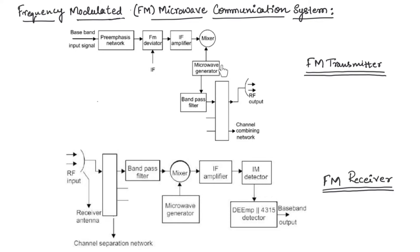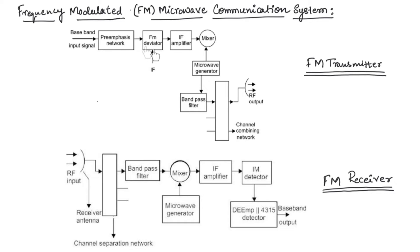This figure shows the FM Transmitter, which consists of various blocks as you can see in this diagram. The first one is the baseband, which is the input signal. This input signal can be an FDM voice channel or TDM channel, composite video signal, or wideband data signal that is applied to the pre-emphasis network as an input. The pre-emphasis network provides extra amplification and also provides a uniform signal-to-noise ratio.